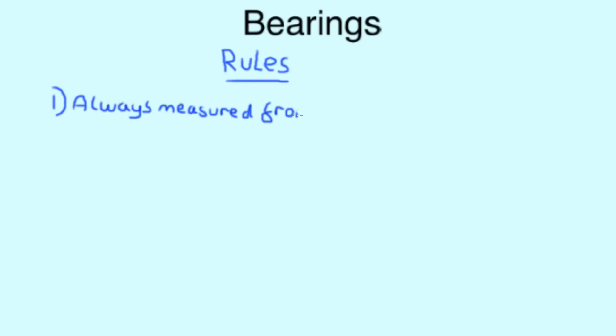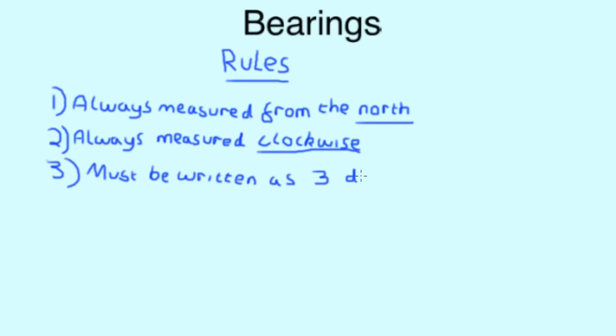Firstly, we always measure bearings from the north. Second, bearings are always measured clockwise. And finally, bearings must be written as three digits. So, for example, instead of 21 degrees, we would write 021.